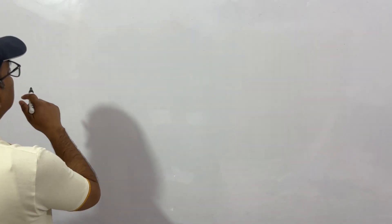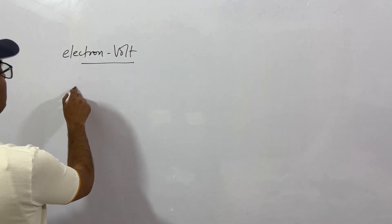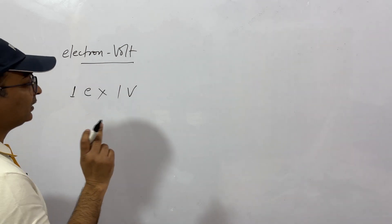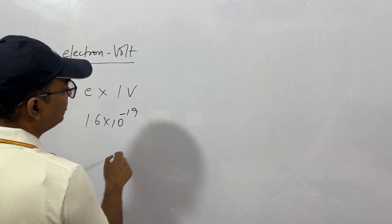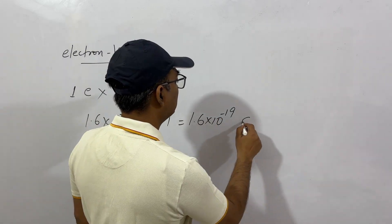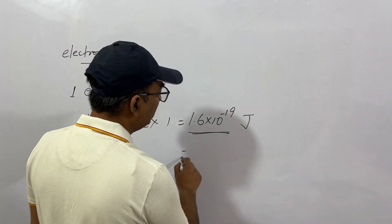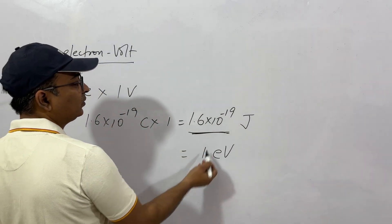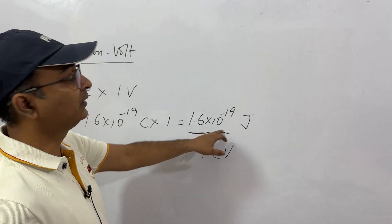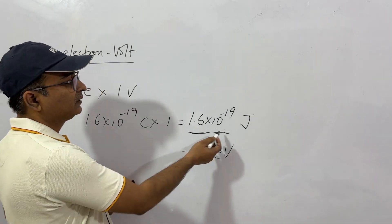One more important thing: electron volt. What is an electron volt? It is a unit of energy. When one electron travels through a potential difference of one volt, the energy gained is one electron volt. One electron volt equals 1.6 times 10 to the power minus 19 coulombs times one volt, which is 1.6 times 10 to the power minus 19 joules. To convert any energy into electron volts, divide it by this quantity. This unit is most relevant when dealing with electrons, protons, and subatomic particles.